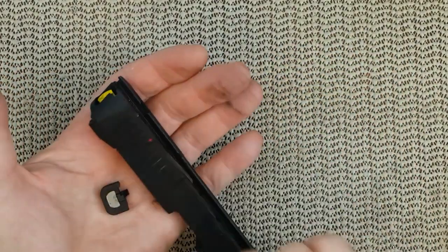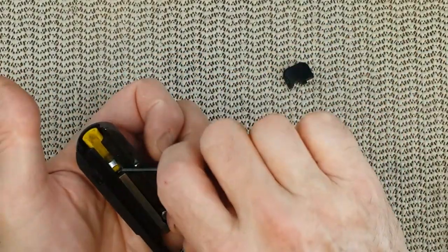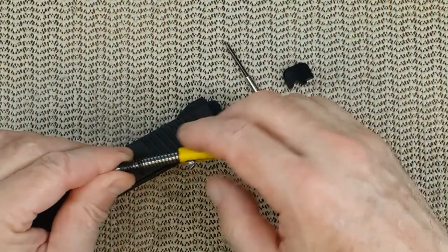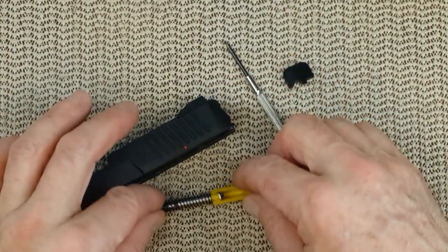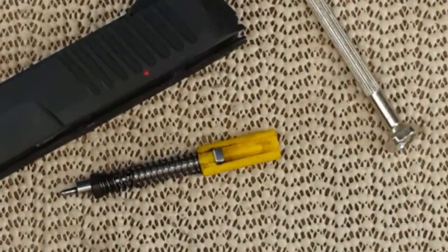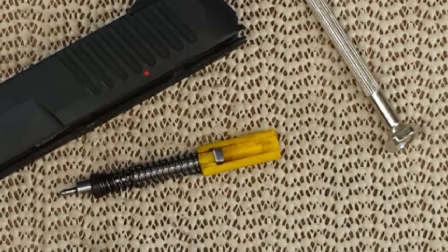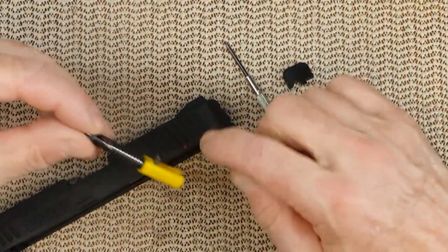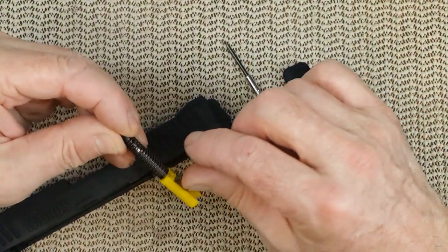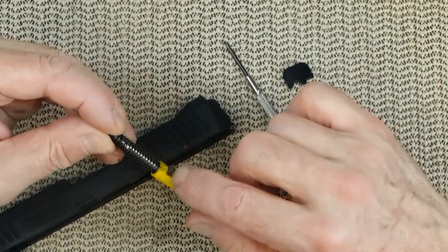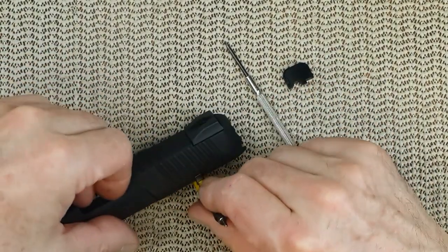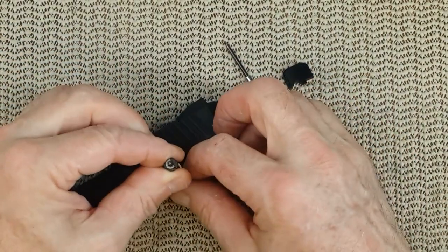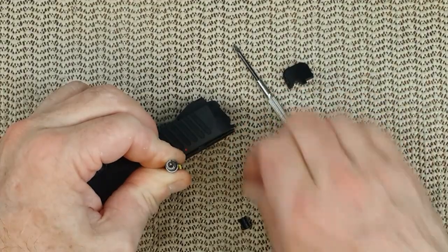So here we have the backplate and then we have the firing pin. The way to take apart the firing pin, you need to relieve some tension on the firing pin right there. You put it onto the slide and push down the spring. Push down the spring and that releases.